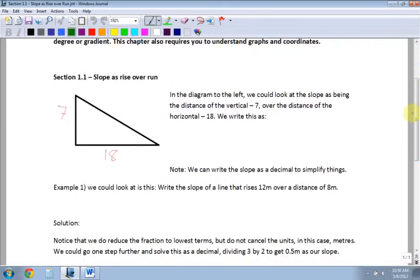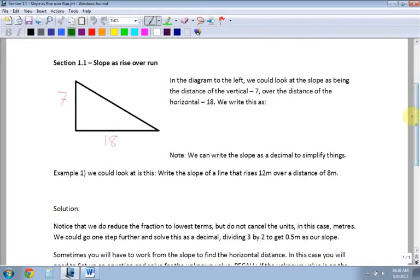For now, we're just going to look at slope as rise over run. We're not going to look at a grid. Again, make sure that you watch that video for section 1.3. So the first thing we're going to look at is the diagram to the left. We could look at the slope as being the vertical distance, which is 7, over the horizontal distance, which is 18. So we can write this as the slope, which is equal to the rise over the run. Be really clear on this, rise over run. That's going to be equal to my rise is 7, and my run is 18.